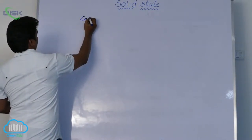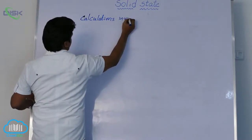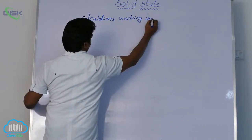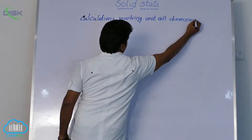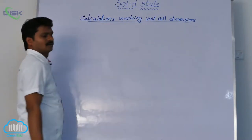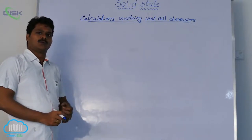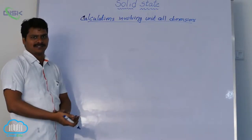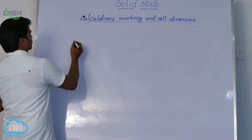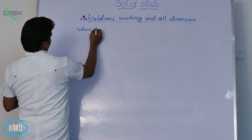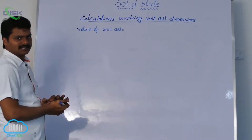Calculations involving unit cell dimensions. We already discussed in the cubic system how to calculate packing fraction and the relation between edge length and radius. From that we can calculate the volume of the unit cell. For a cubic system, the volume of the unit cell is equal to A cubed.